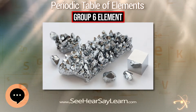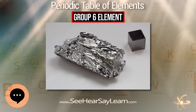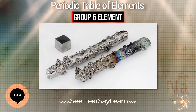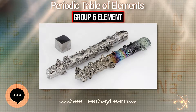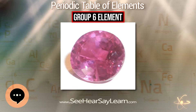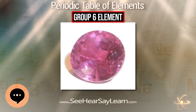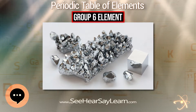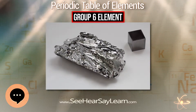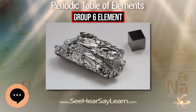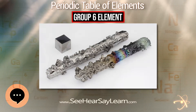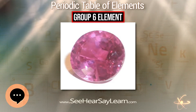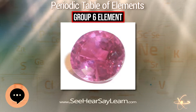During the 1800s, chromium was primarily used as a component of paints and in tanning salts. At first, crocoite from Russia was the main source, but in 1827 a larger chromite deposit was discovered near Baltimore, United States. This made the United States the largest producer of chromium products until 1848, when large deposits of chromite were found near Bursa, Turkey.